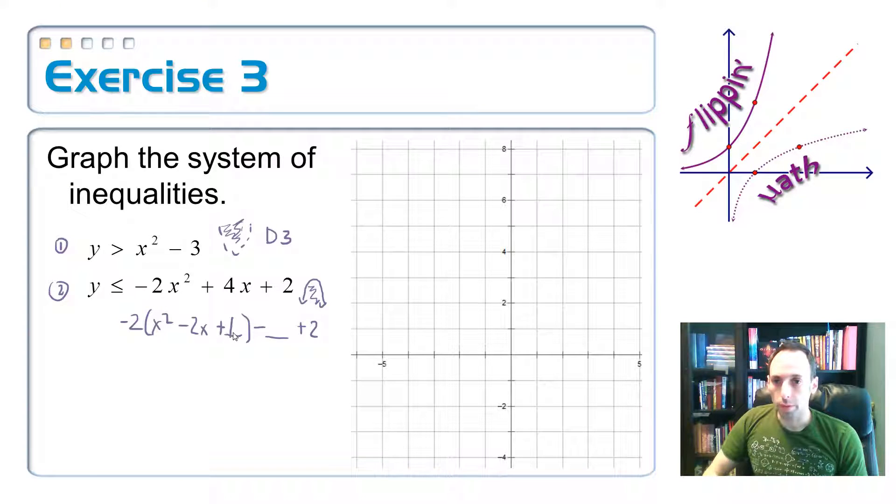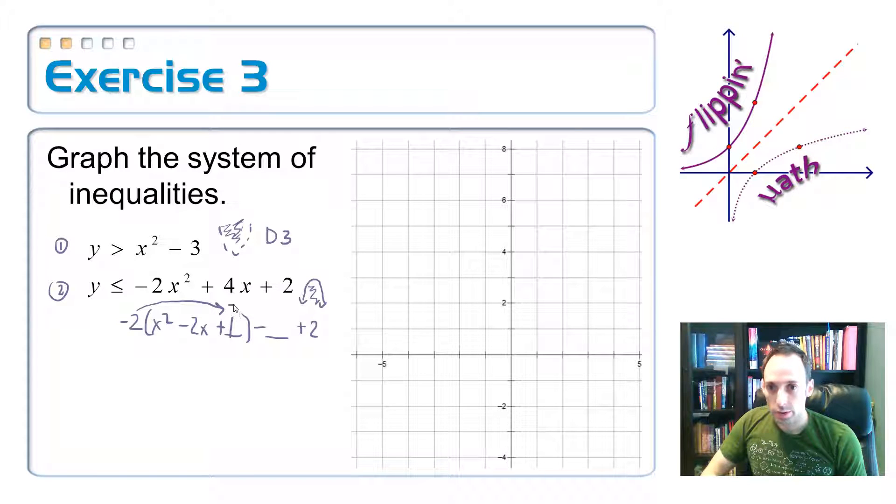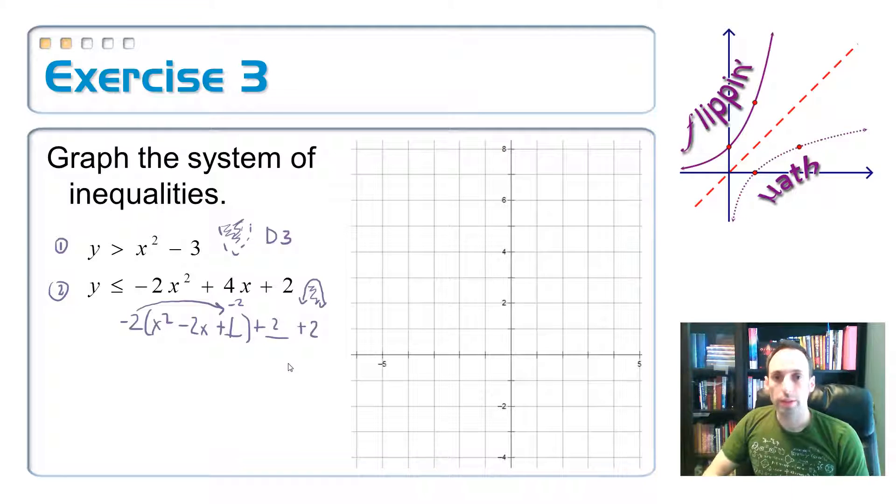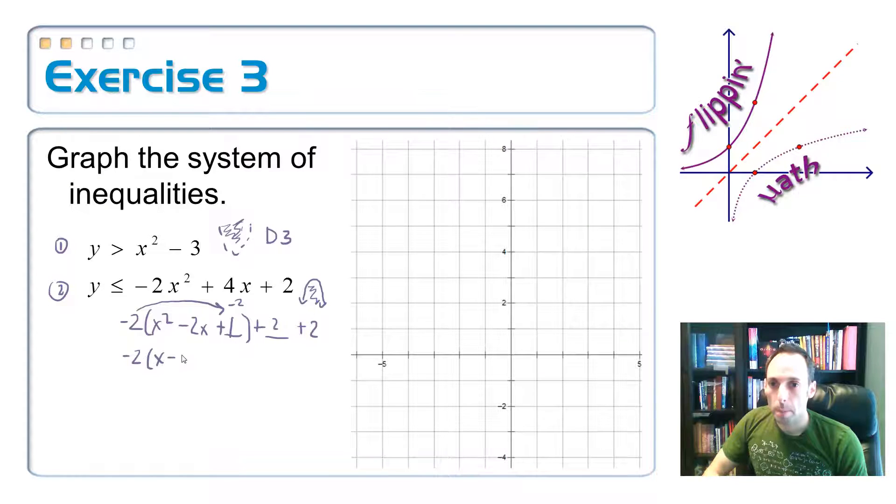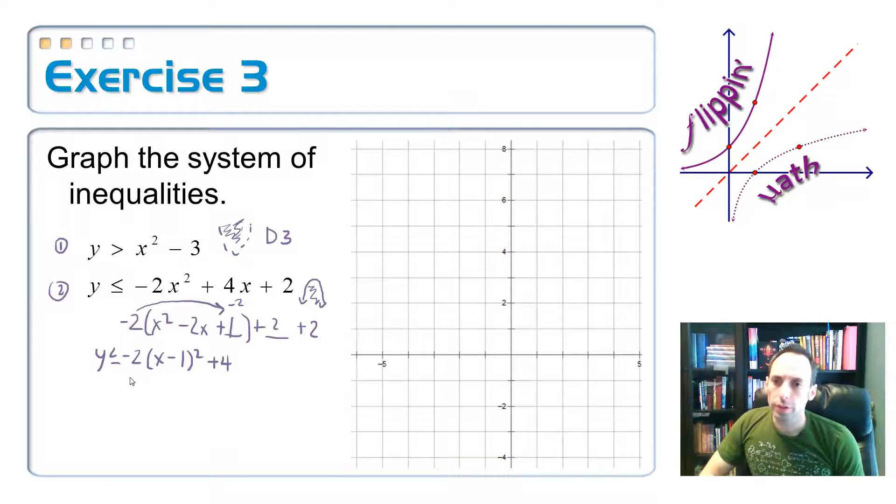Square it, I get one. Did I add one? No, I didn't. I actually subtracted two, so I have to add two at the end of this. So this is negative two times (X minus one) squared plus four. So here's my new inequality, same inequality, just looks a little different with a vertex at one, four.